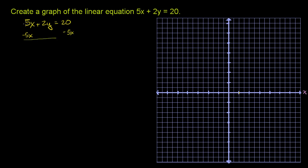The left-hand side, these guys cancel out, so we get 2y is equal to, on the right-hand side, you have 20 minus 5x.